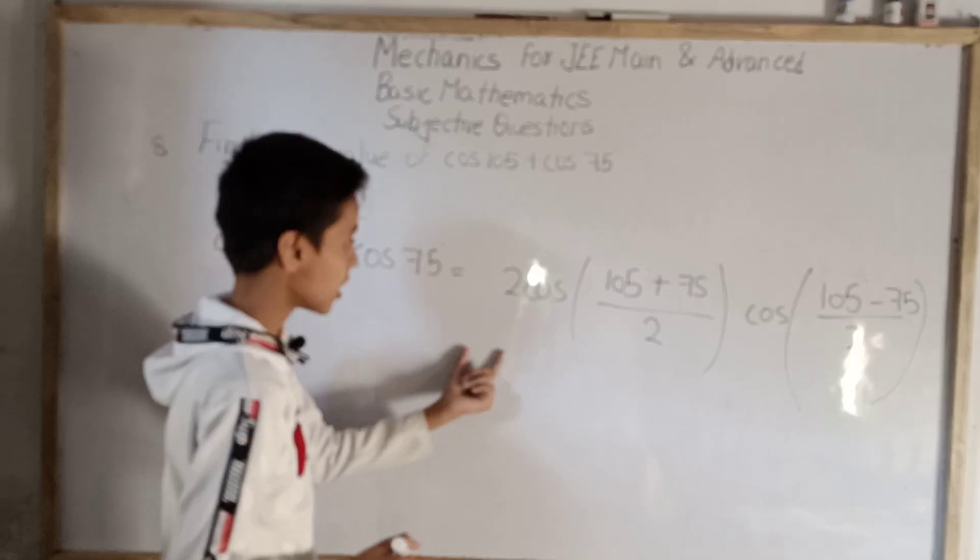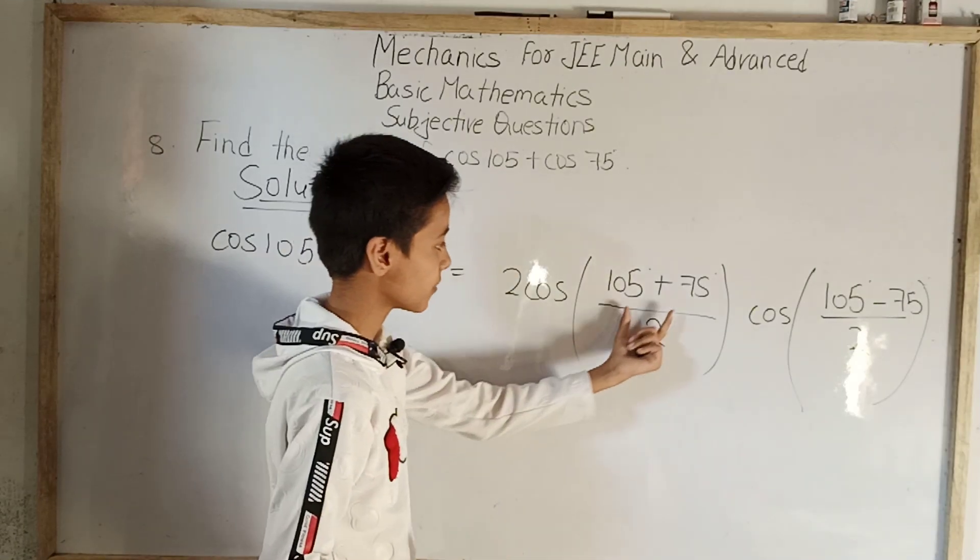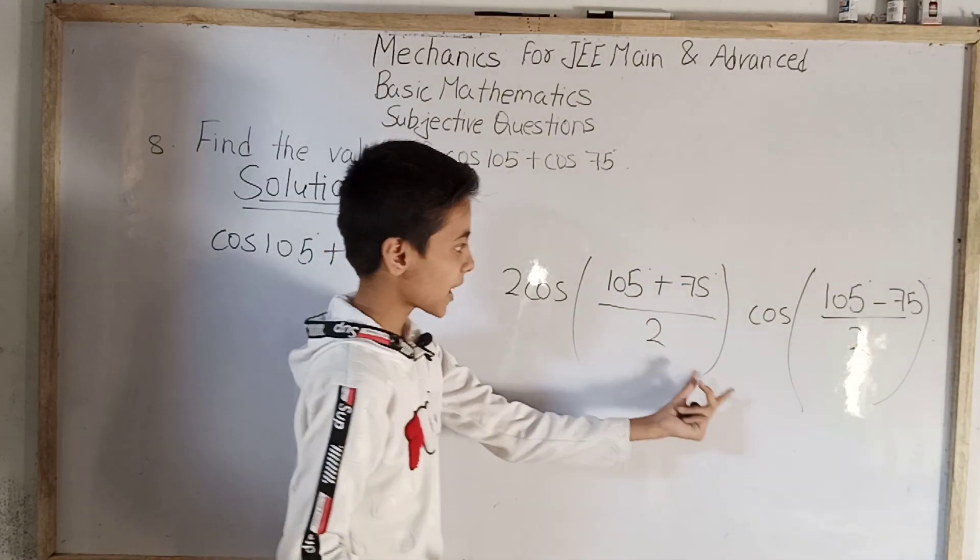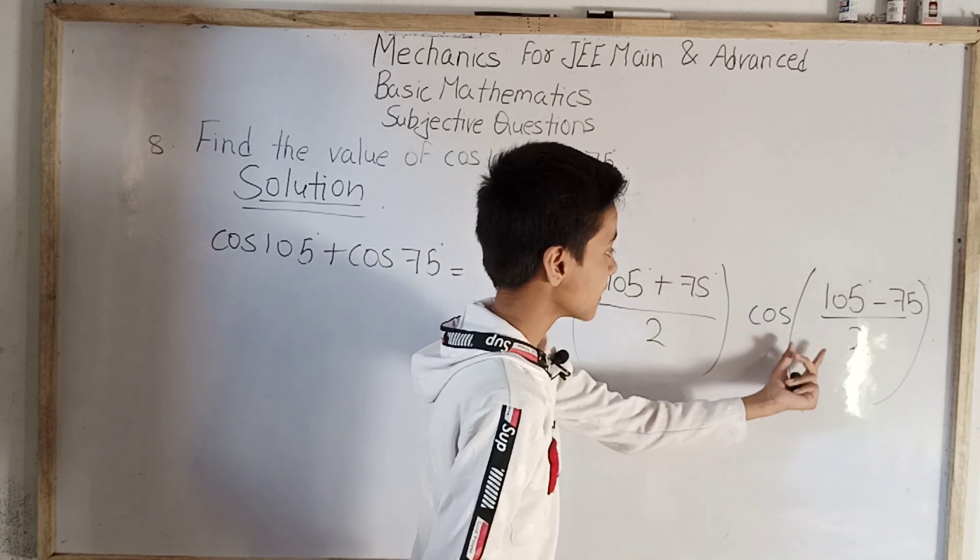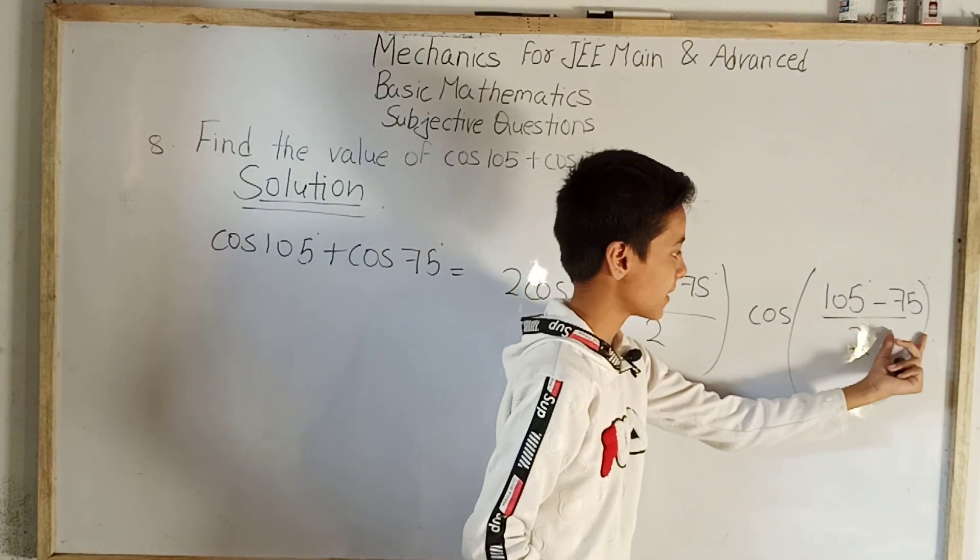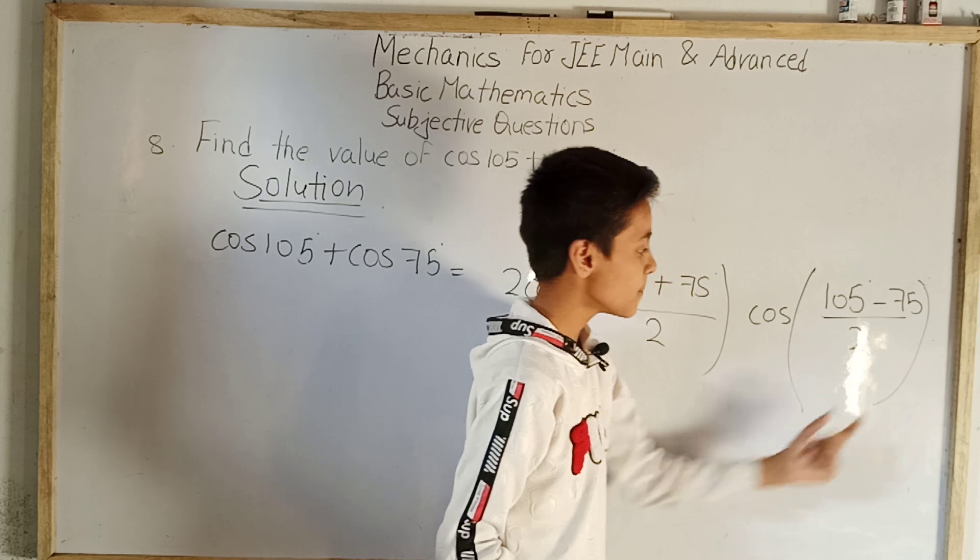Finally, we got: 2 cos bracket 105 degree plus 75 degree by 2, bracket close, cos bracket 105 degree minus 75 degree divided by 2, bracket close.